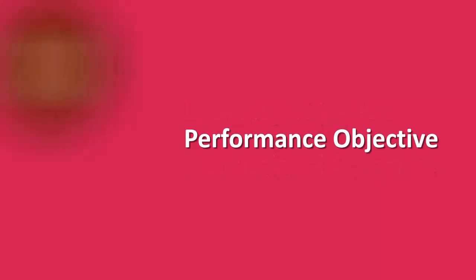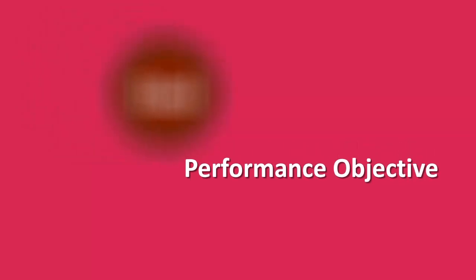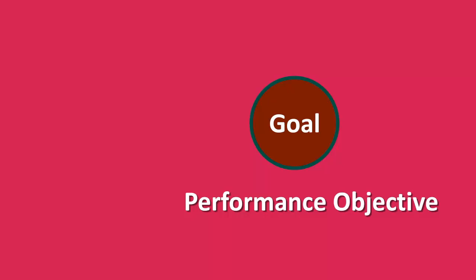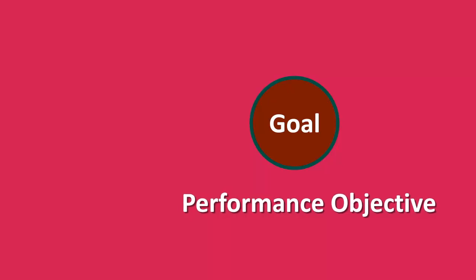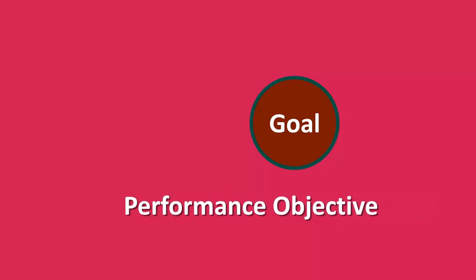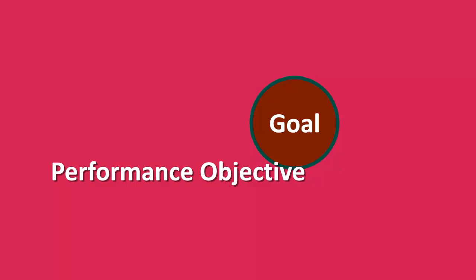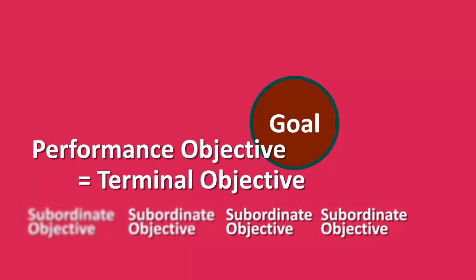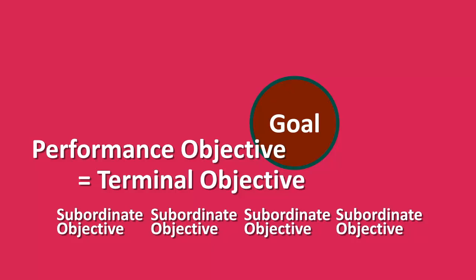Taking a goal and making it clear and precise can be thought of as a conversion of sorts. When an instructional goal is converted to a performance objective, it is often referred to as a terminal objective. Objectives used along the way to a terminal objective are referred to as subordinate objectives.